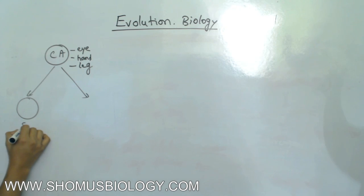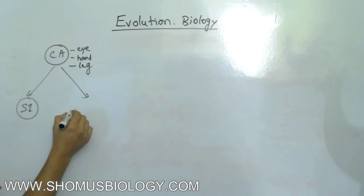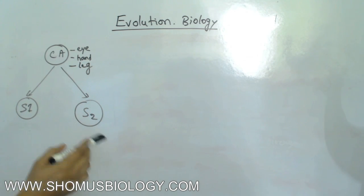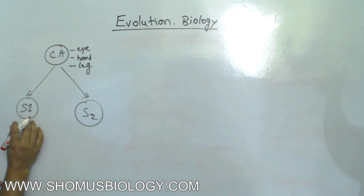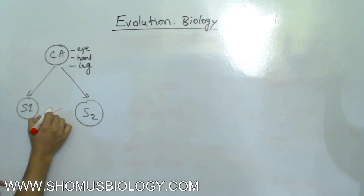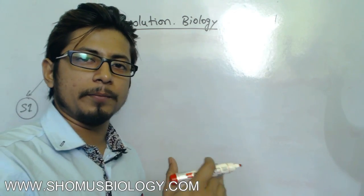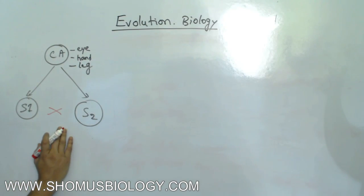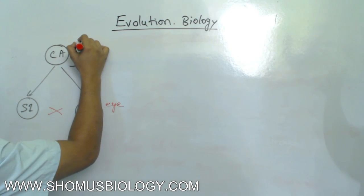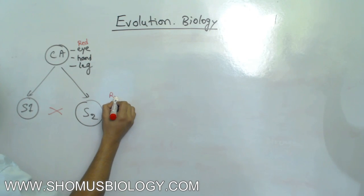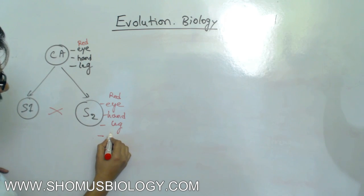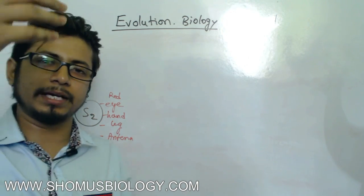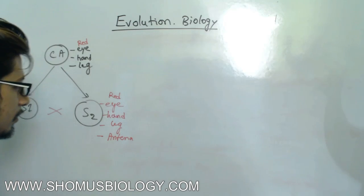Now the species number one, S1, and species number two, S2. Why we call them species one and two? Because they are separate and species one members and species two members never interbreed. They never breed between themselves, so it's not possible. That's why we call them different species. Now S2 has all the features like the common ancestor. It has the eye, let's say red eye like the common ancestor. It also has the hand, it also has the leg, along with antenna like the antenna that we can see in insects mostly.